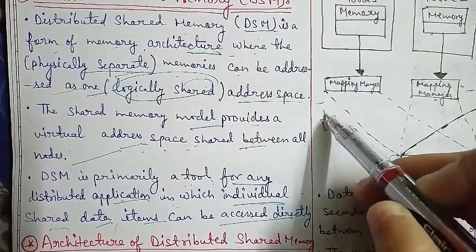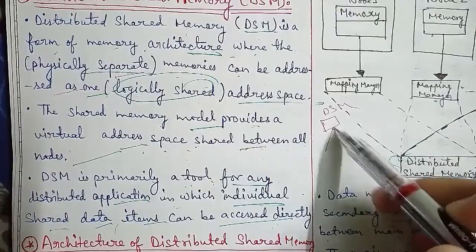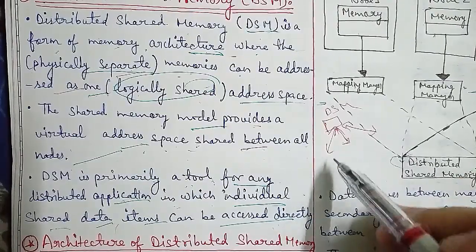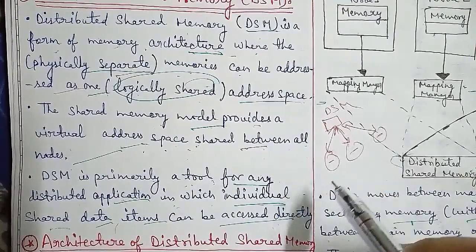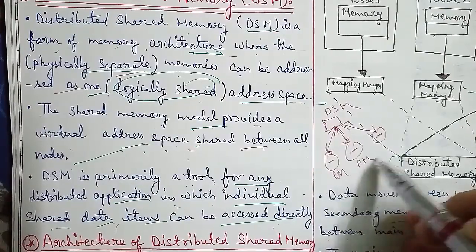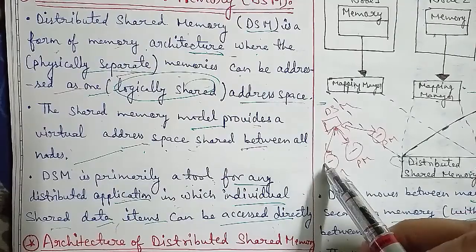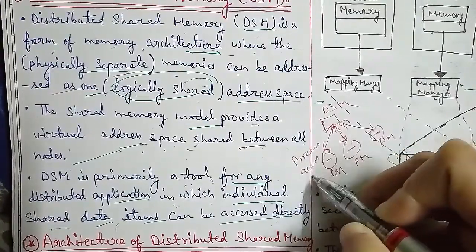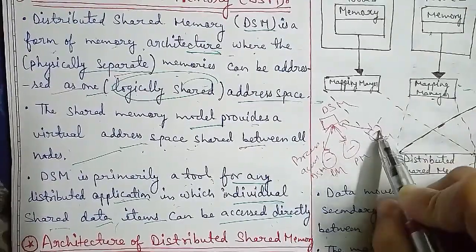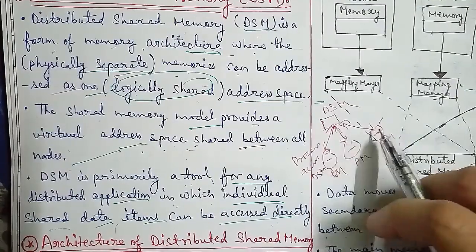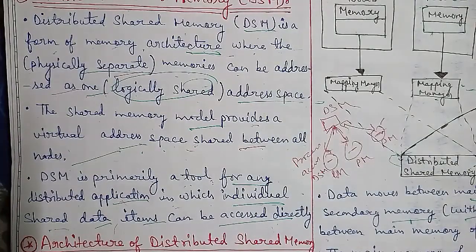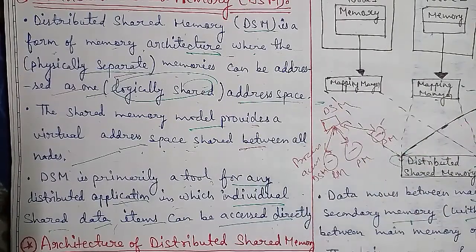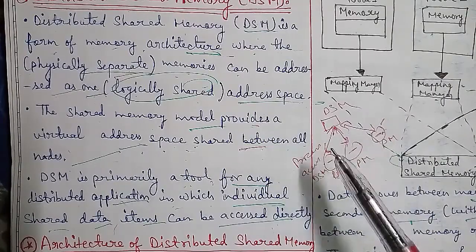Looking at the DSM diagram, it has multiple physical memory components - you can see the physical memory nodes. The process accesses the DSM - Distributed Shared Memory - and DSM appears as memory in the address space of that particular process. DSM has different physical memory according to the nodes, but it represents a single shared memory though the physical memory is actually distributed.